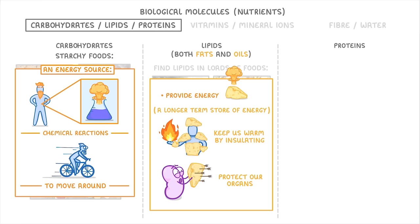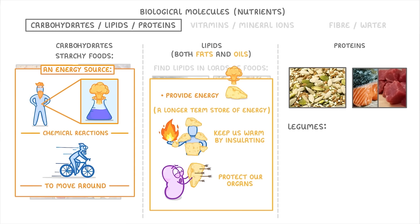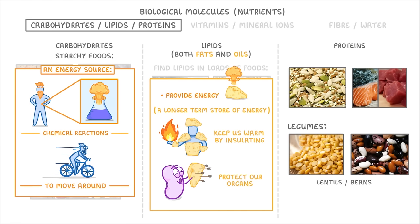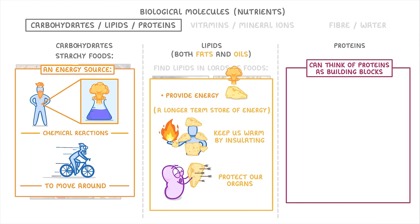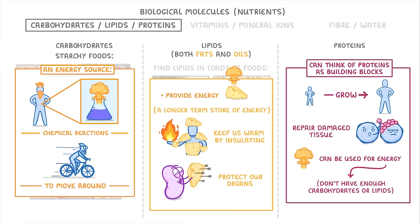Finally, proteins are also found in a range of foods, but particularly nuts and seeds, meat and fish, and also legumes — meaning things like lentils and beans. You can think of proteins as building blocks, so we need them to grow and to repair damaged tissue. They can also be used for energy, but only really in emergencies if we don't have enough carbohydrates or lipids.